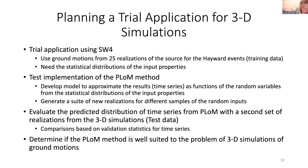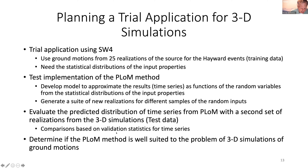These methods are intended for complex vector outputs like time series, not just intensity measures like response spectra. We're looking at a trial application for SW4 starting with about 25 source realizations. We need the statistical distribution of input parameters to be sampled consistently. The method approximates time series results as functions of the random variables, then samples more random variables to create new realizations, evaluated against a second held-out test set using the same validation statistics discussed this morning. The goal is to determine whether this method is well-suited to the ground motion problem.